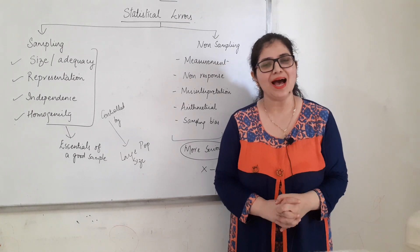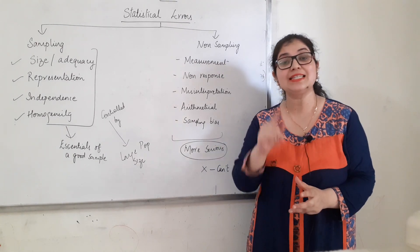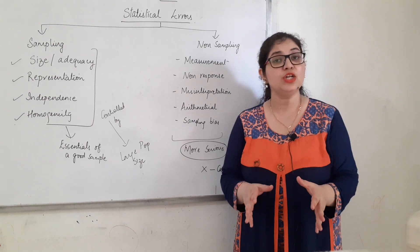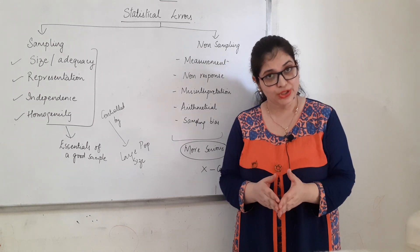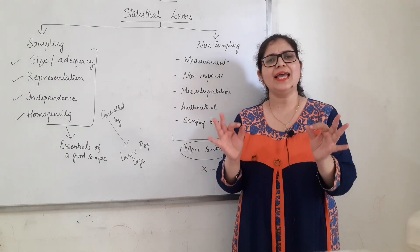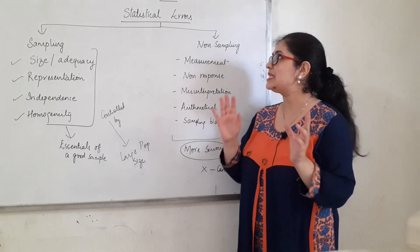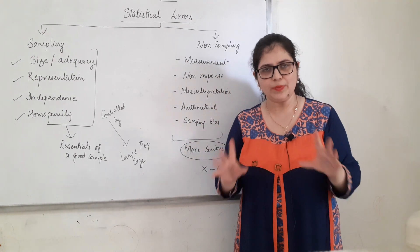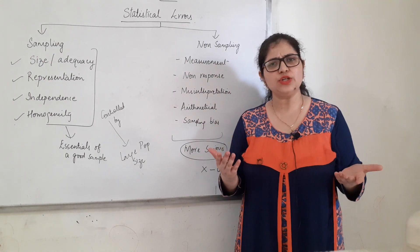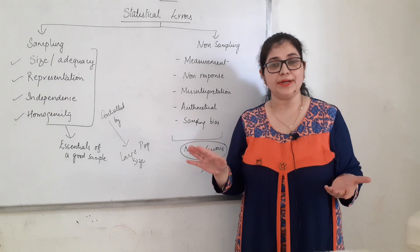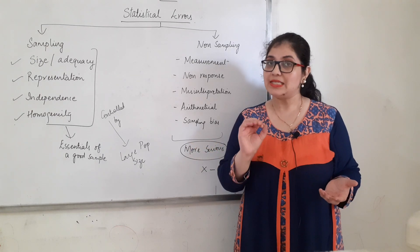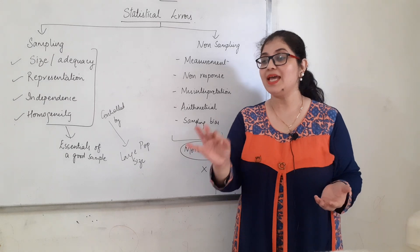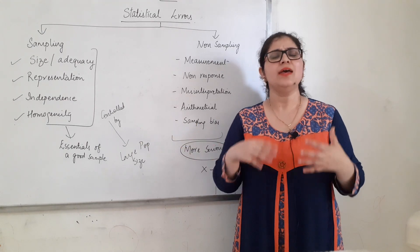Welcome everyone, aap log dekh rahe hai Eco World Issue Classes. This is statistics series for standard 11th and we are doing chapter number 3. Chapter number 3 ka ek topic hai sampling statistical errors — ek dabba hai book mein us mein hota hai. And lot of kids kind of ignore it, but yeh bahut important topic hai.